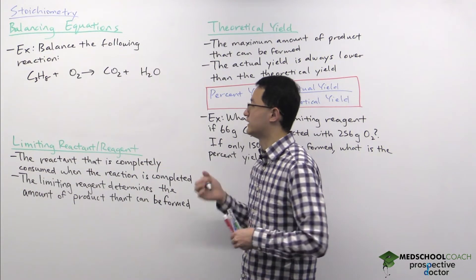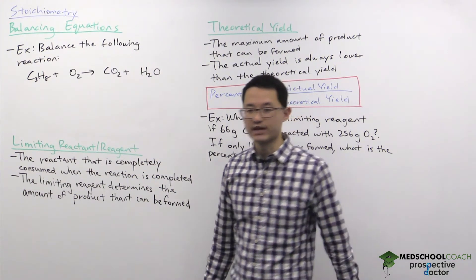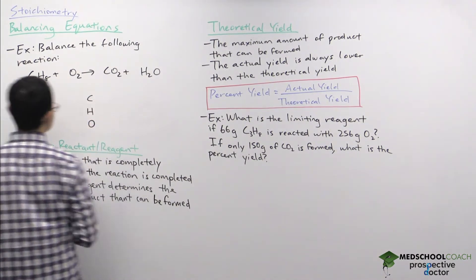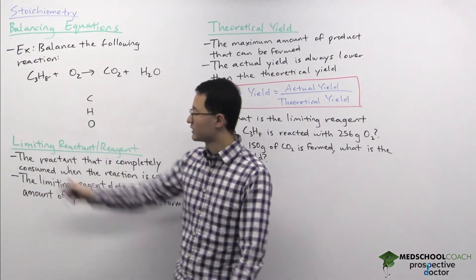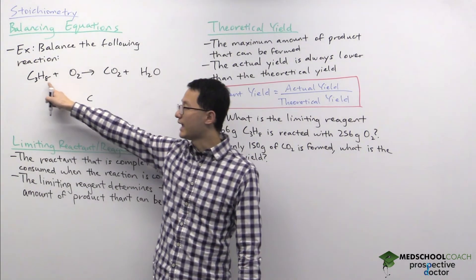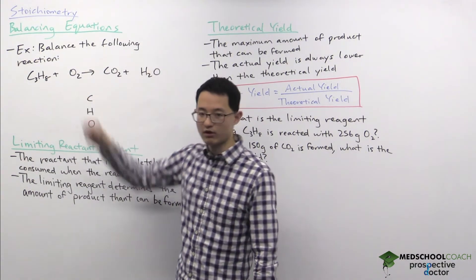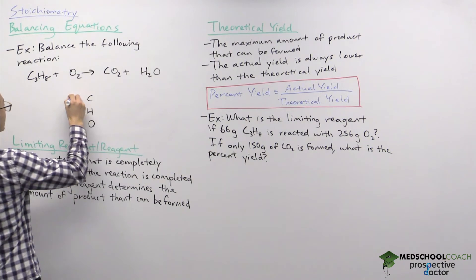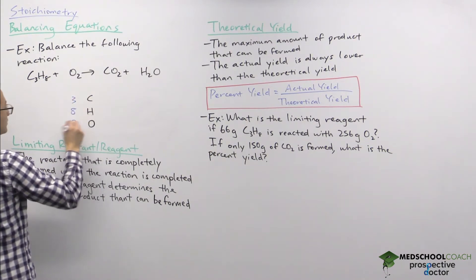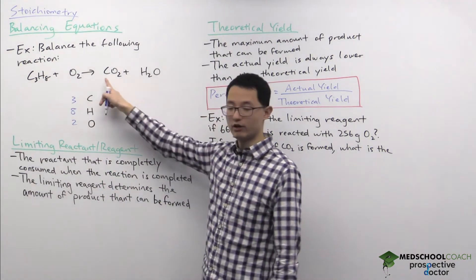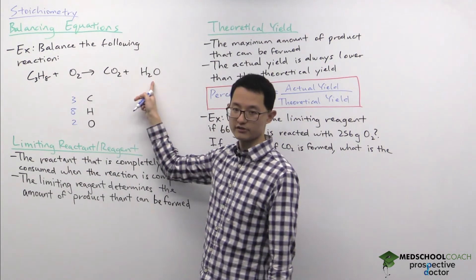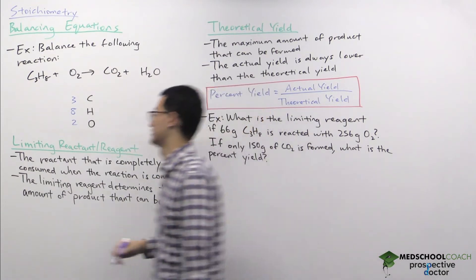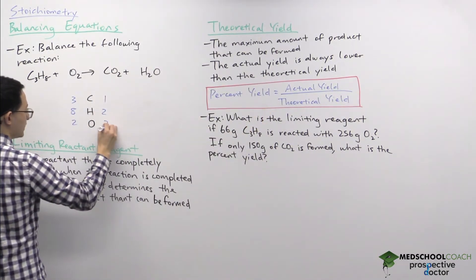The first thing you want to do is tally up the number of atoms you have on both sides of the reaction. We have carbon, hydrogen, and oxygen in this reaction. On the left side we have three carbon atoms, eight hydrogen atoms, and two oxygen atoms — so three, eight, and two. On the right side we have one carbon atom, two hydrogen atoms, and three oxygen atoms (two from carbon dioxide, one from oxygen) — so one, two, and three.